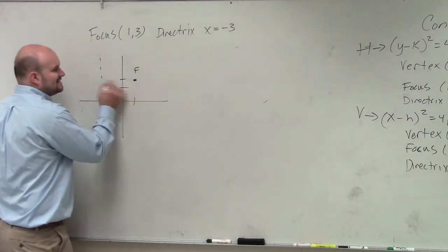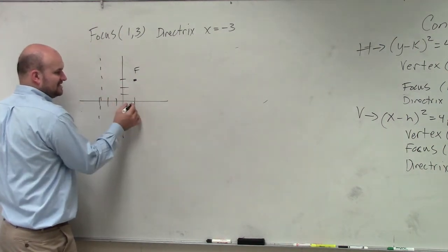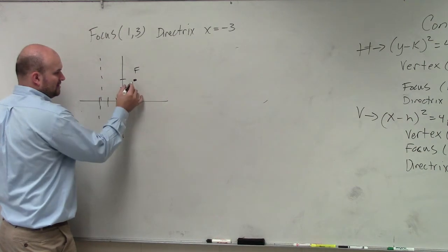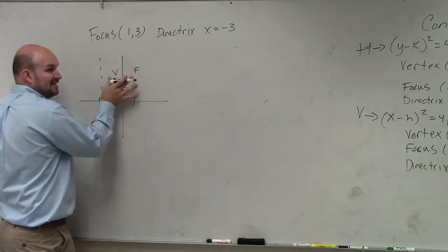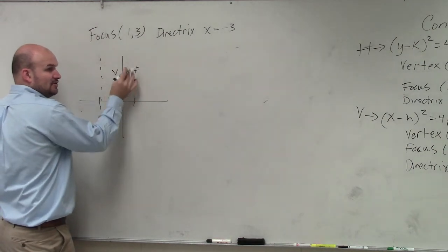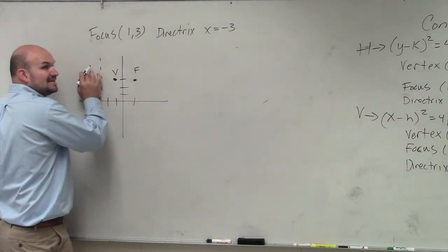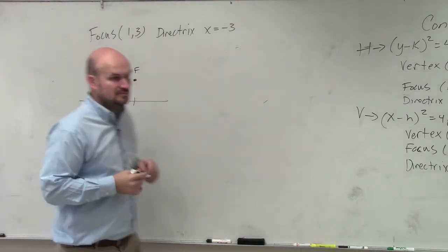So my vertex is halfway in between. So this distance is 1, 2, 3, 4. So therefore, I could say my vertex is right there, halfway in between. Because vertex to focus is P, vertex to directrix is opposite of P. You guys see that?